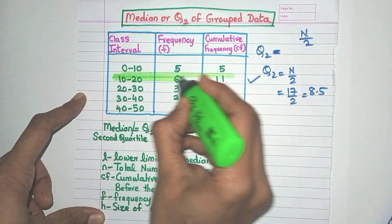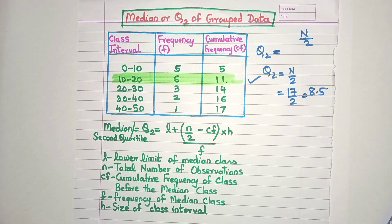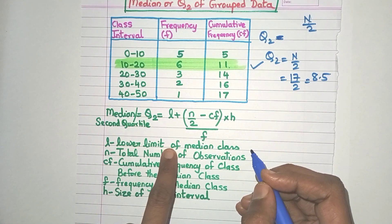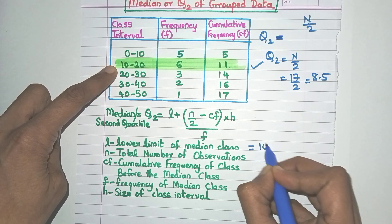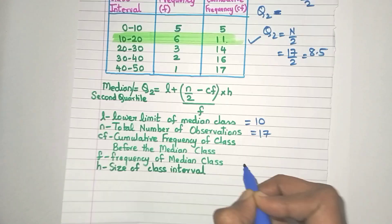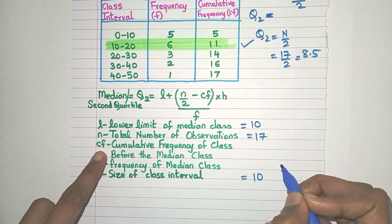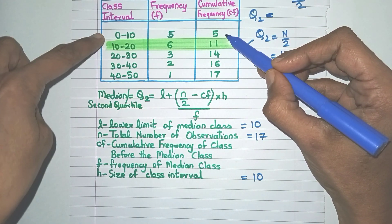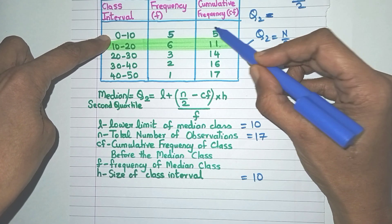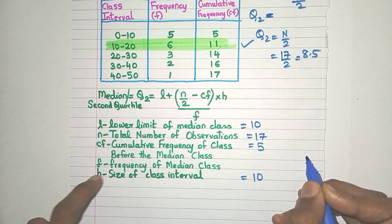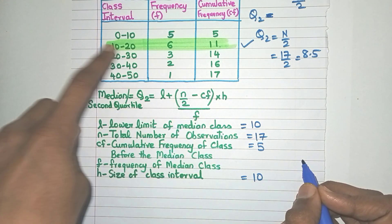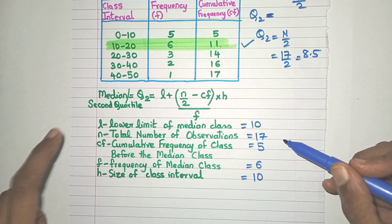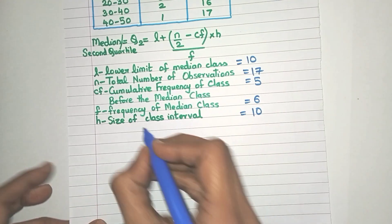This is the second quartile class, or the median class — highlighted. L is the lower limit of the median class, so L = 10. n is still 17, and class size h is still 10. CF is the cumulative frequency of the class before the median class, which has CF = 5. f, the frequency of the median class, is 6. Don't confuse f with the CF value.